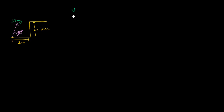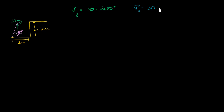The vertical component of our velocity is going to be equal to the magnitude of our total velocity — 30 meters per second — times the sine of 80 degrees, because sine is opposite over hypotenuse. The horizontal component of our velocity is going to be 30 meters per second times the cosine of 80 degrees, since cosine is adjacent over hypotenuse.